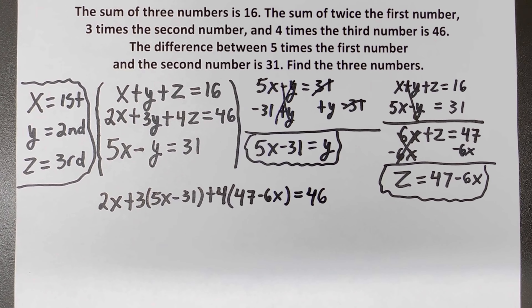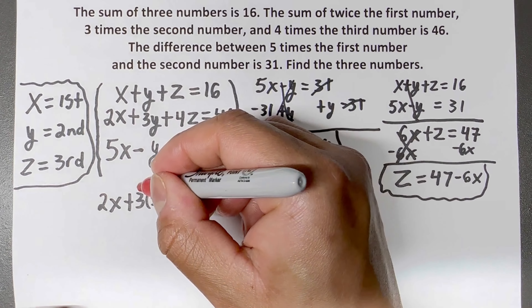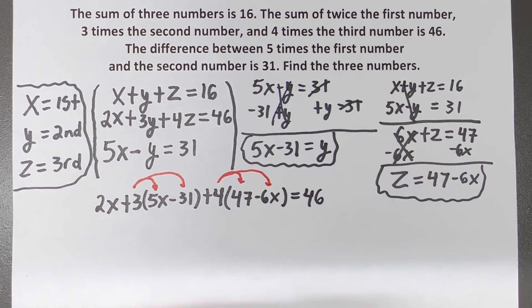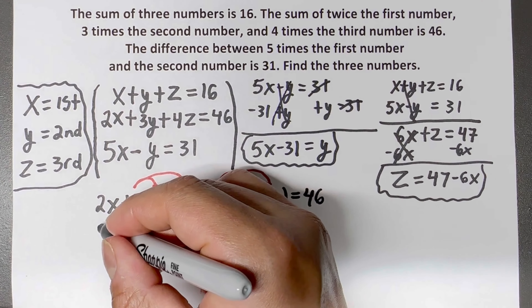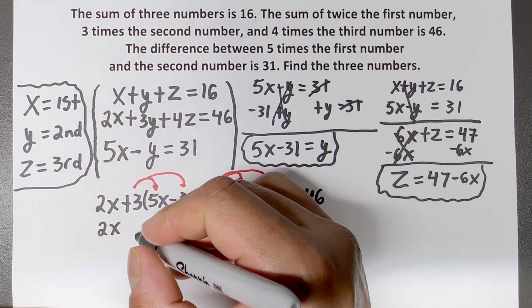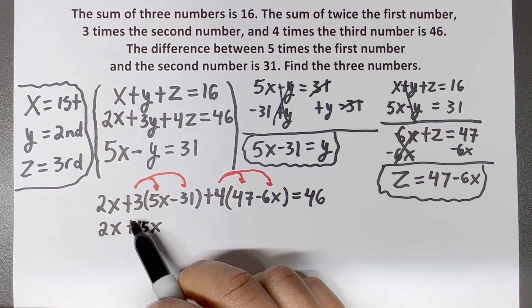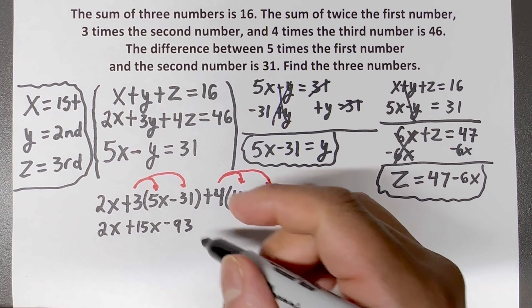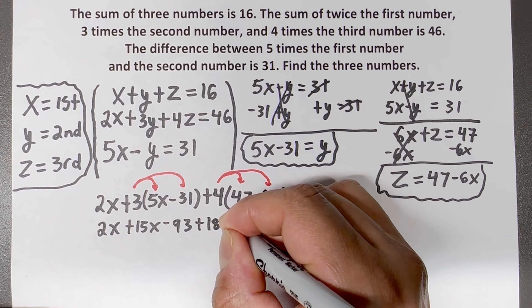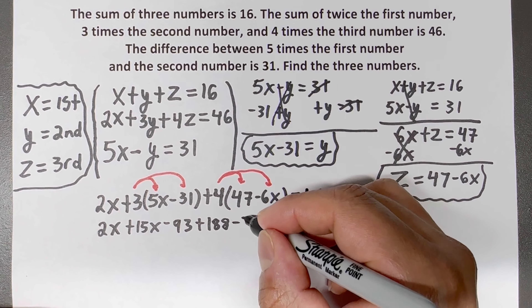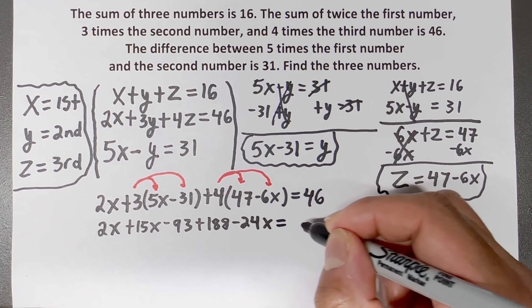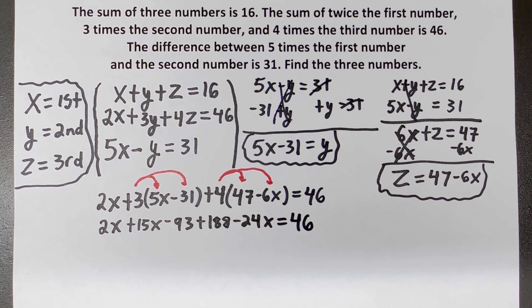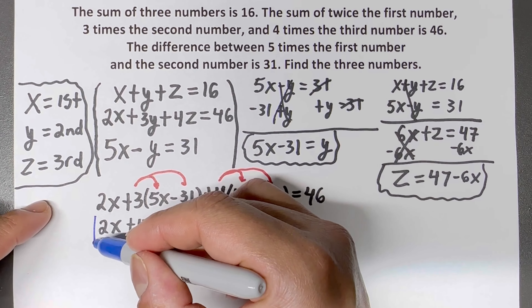I'll distribute the 3 into (5x minus 31) and distribute the 4 into (47 minus 6x). That gives me: 2x plus 15x minus 93 plus 188 minus 24x equals 46. Now I can combine like terms — the x terms and the constants.